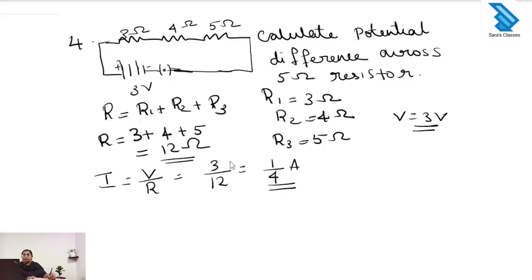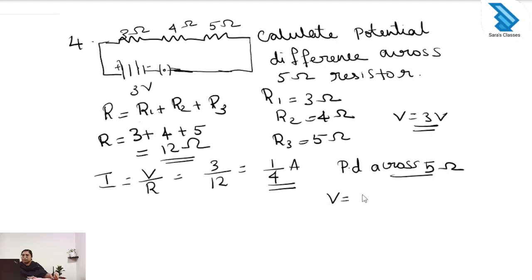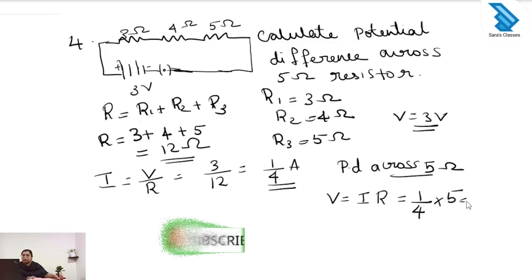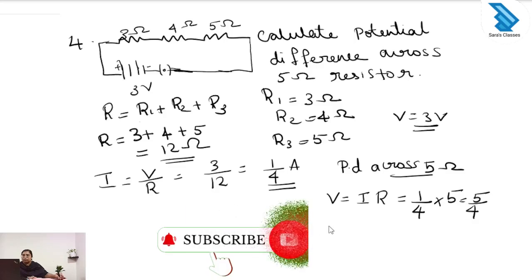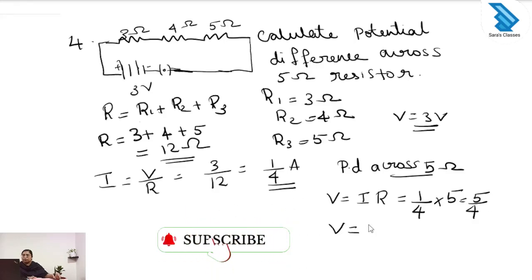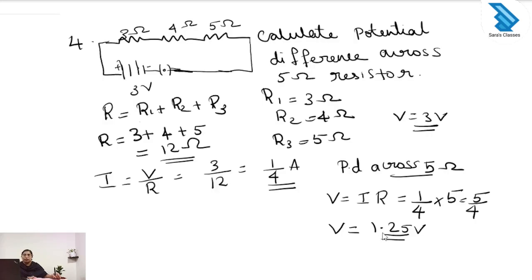Next we have to find the potential difference across the 5 ohm resistor. V equals I into R, where I is 1 by 4 and R is 5 ohm. So the potential difference across 5 ohm is 5 by 4, which equals 1.25 volt.